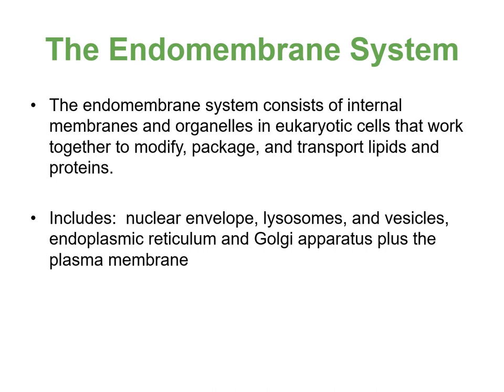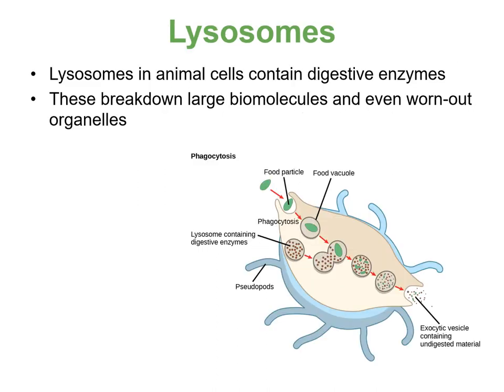The endomembrane system consists of internal membranes and organelles within eukaryotic cells that work together to modify, package, and transport lipids and proteins. It includes the nuclear envelope, lysosomes, vesicles, endoplasmic reticulum, Golgi apparatus, and plasma membrane. Lysosomes — found only in animal cells — contain digestive enzymes that break down large biomolecules and even worn-out organelles. This makes sense because animal cells actively consume food, unlike plant cells which photosynthesize.